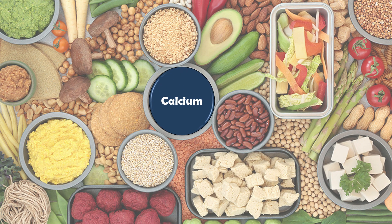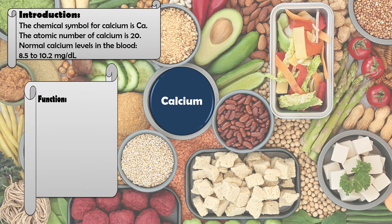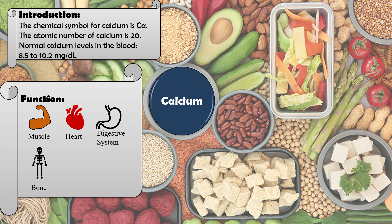Let's start with calcium. The symbol for calcium is Ca and the atomic number is 20. The normal level of calcium in the blood is 8.5 to 10.2 mg/dL. Calcium is required for muscle and heart health, maintaining the digestive system, and most importantly for building bones.